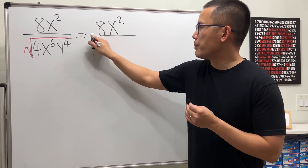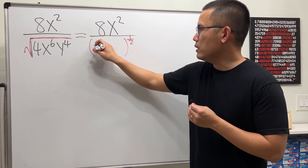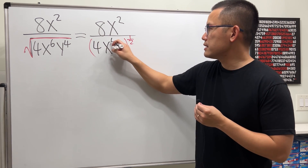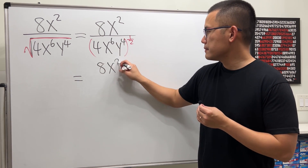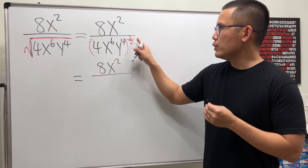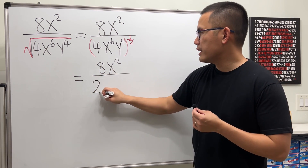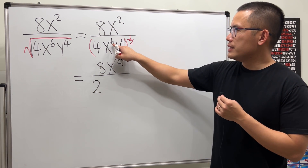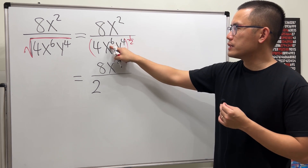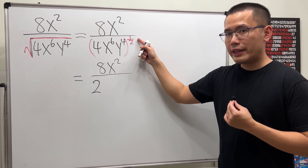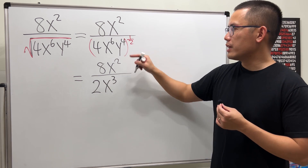So let's look at this as 8x squared over parentheses to the one-half power, and then we have 4, then x to the 6, and then y to the 4. The top stays the same. 4 to the one-half power is just the square root of 4, which is 2. Now x to the sixth power to the one-half power — we multiply the powers: 6 times one-half gives us 3, and 4 times one-half gives us 2.